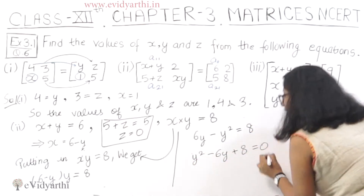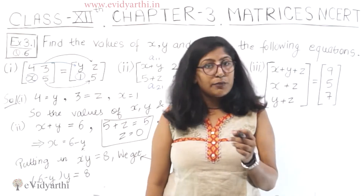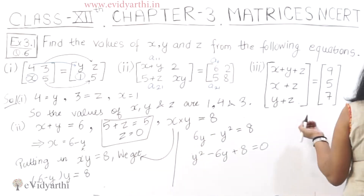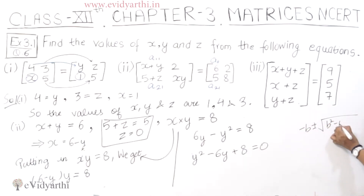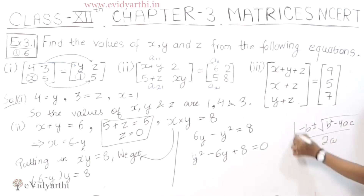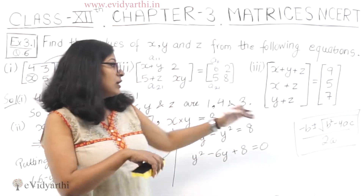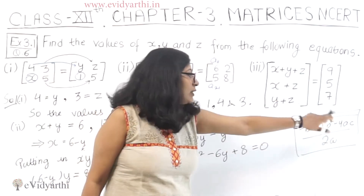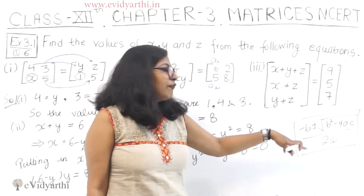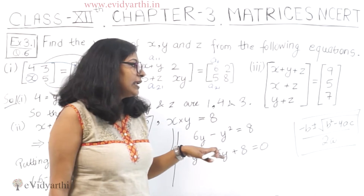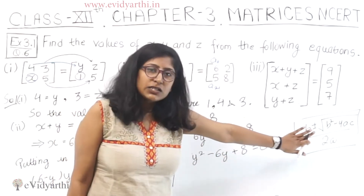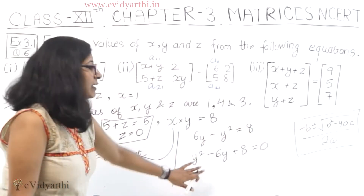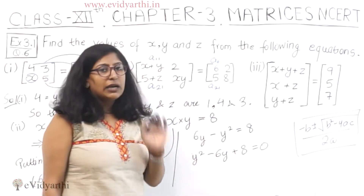Middle term split: 8 equals 4 into 2. We can also use the Shri Dharacharya formula: minus b plus minus under root b squared minus 4ac upon 2a — that is the discriminant formula used to find quadratic roots. I will use middle term split. I will write minus 4 minus 2.